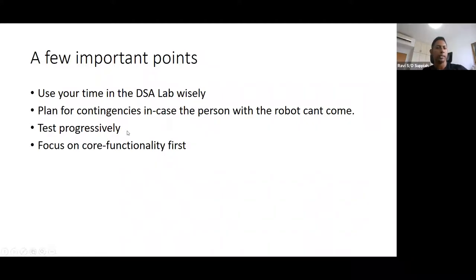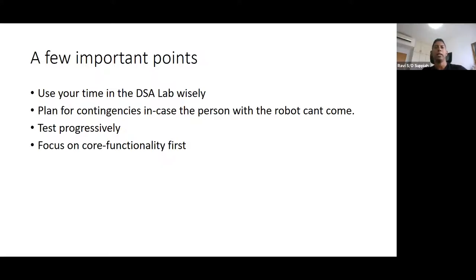I have seen groups in the past just dump everything in at one time and hope that it works. If it doesn't, you are really stuck and don't know where to go back to restart the whole process. Test progressively — don't try to integrate all things together and then test. Test one aspect of your robot separately, and when you integrate it, also test that one particular feature to confirm it is still working, then move on.